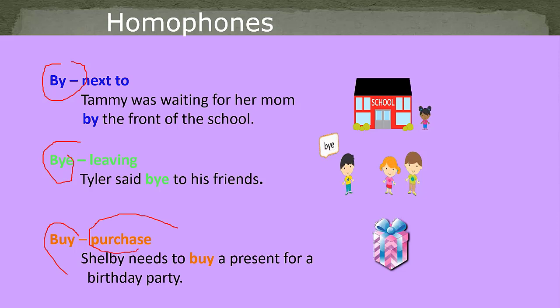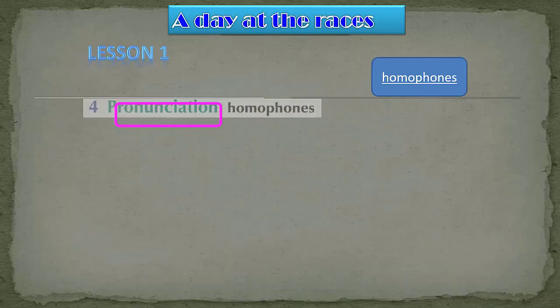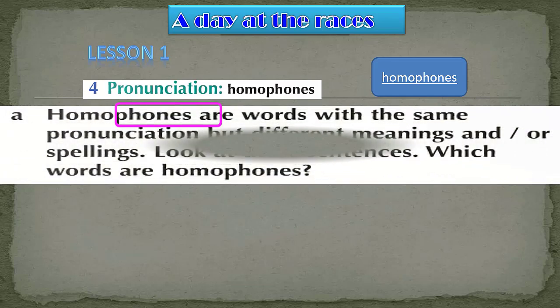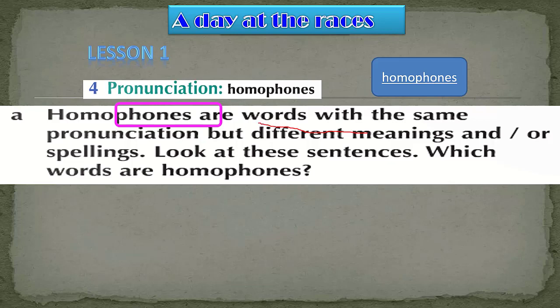Now go to your student books, Unit 7, Lesson 1. At the end of Lesson 1 you will find the section about homophones. Homophones, as I've just said, are words with the same pronunciation but different meanings and spelling.